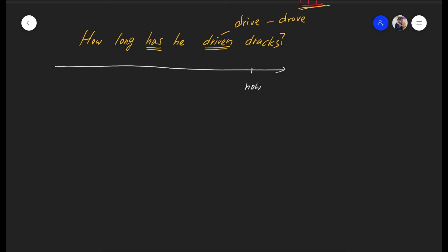So let's say this person is now 36 and he started driving trucks when he was 26. 10 years in between. So it's for 10 years. So he has driven trucks for 10 years. That's how you answer this question. So for with the period of time.